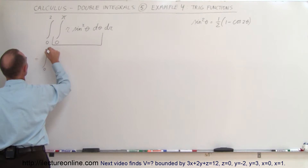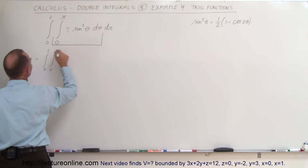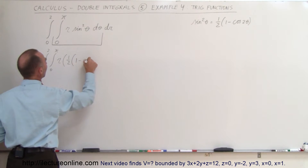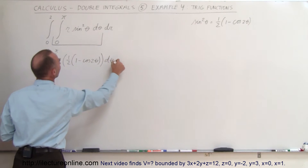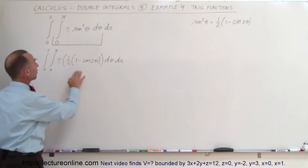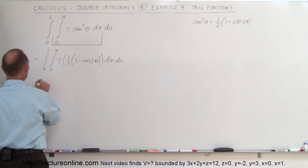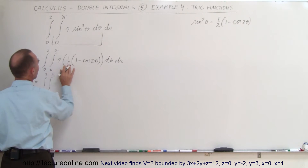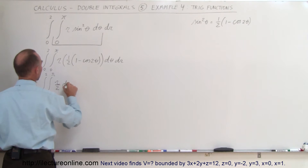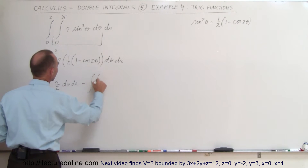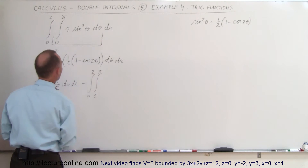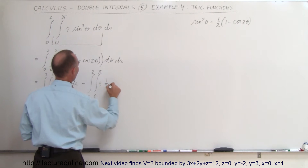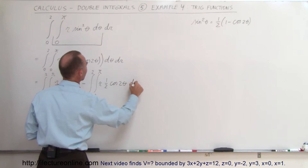This can be written as the double integral from 0 to 2 and from 0 to pi, of r times one half times (1 minus the cosine of 2 theta) d theta dr. Because there's a minus in here, we're going to end up with two integrals: the integral from 0 to 2, integral from 0 to pi of r divided by 2 d theta dr, minus the double integral from 0 to 2 and from 0 to pi of r times one half times cosine of 2 theta, d theta dr.